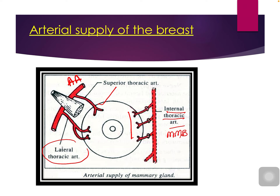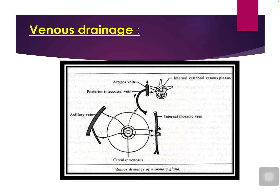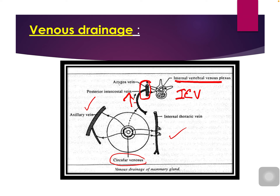The venous drainage: veins form a plexus around the areola called the circulus venosus. From this plexus, the veins radiate to the periphery and drain into axillary veins, internal thoracic veins, and posterior intercostal veins. The posterior intercostal veins drain into the azygos system of veins, which communicate with the internal vertebral venous plexus and then into the intracranial venous sinuses. This is important because carcinoma of the mammary gland may spread secondaries to the vertebrae.